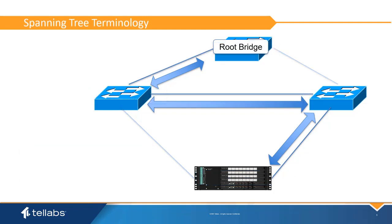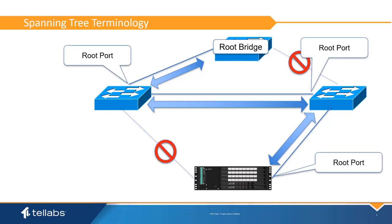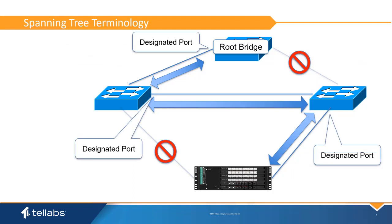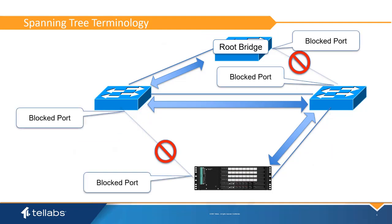Spanning tree will attempt to determine the cost of each path from the bridge to the root. Traffic will be sent along the least cost path to the root, and any redundant paths will be blocked. The root port is the port determined to be the least cost path back to the root bridge. If there is a tie in path cost, the path to the neighbor with the lowest bridge ID will be elected as the root. A designated port is a port in the forwarding state forwarding traffic away from the root bridge. A blocked port is a port determined to be a redundant path and not selected as the best path to the root bridge by STP.